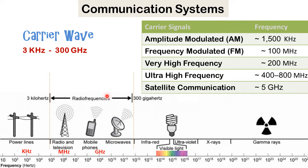The carrier waves that are used are in the region of three kilohertz to three hundred gigahertz. This is the electromagnetic spectrum used for transmission in communication systems. You will hear terms like amplitude modulated, frequency modulated, and very high frequency (VHF), and we will come to those shortly.